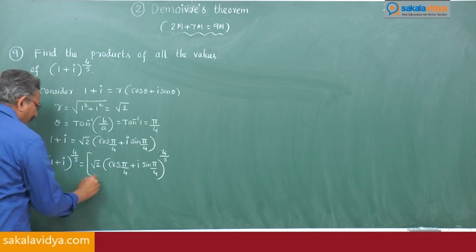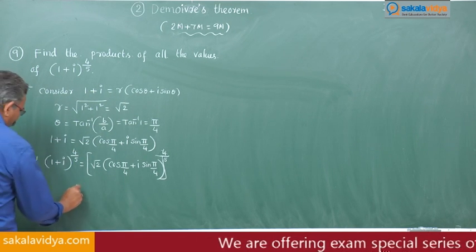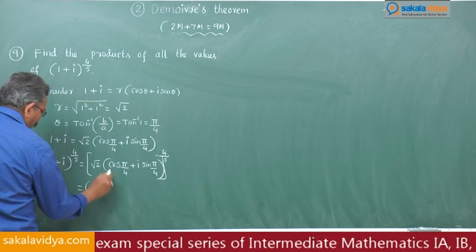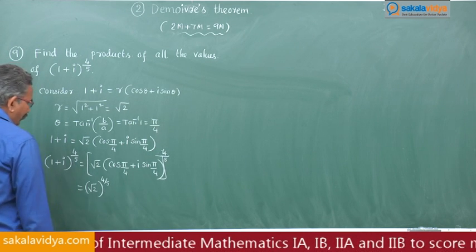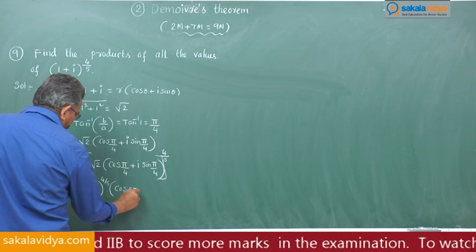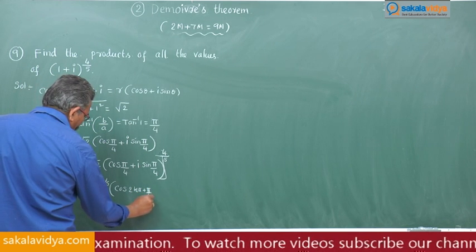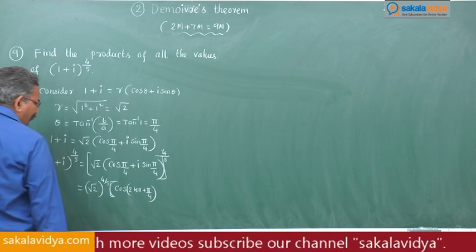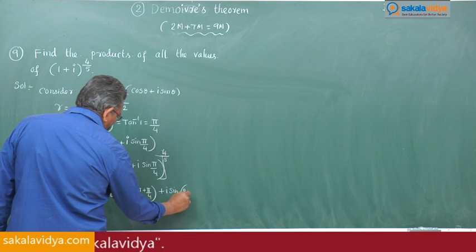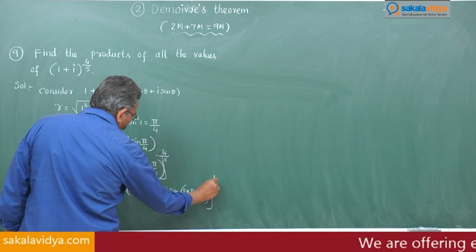We have to apply De Moivre's theorem for rational index p by q. So this is (root 2) to the power of 4 by 5, and we can write one more step: cos(2kπ + π/4) plus i sin(2kπ + π/4), whole to the power of 4 by 5.